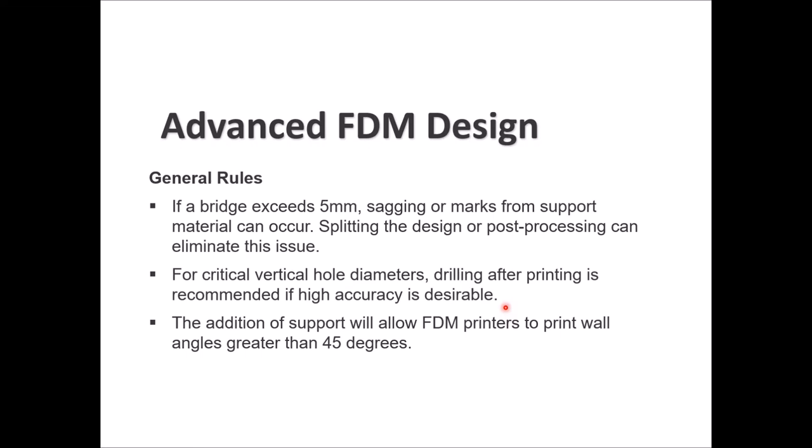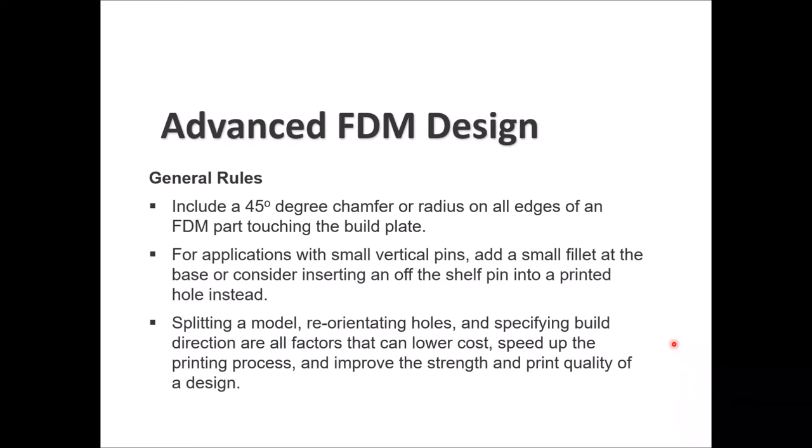Here are some general rules for FDM design. If a bridge exceeds 5 millimeters, marks from support material can occur — splitting the design and post-processing can eliminate this. For vertical holes with extremely small critical diameters, drilling after printing is recommended for high accuracy. Adding support allows FDM printers to print wall angles greater than 45 degrees; otherwise, stick to 45 degrees.